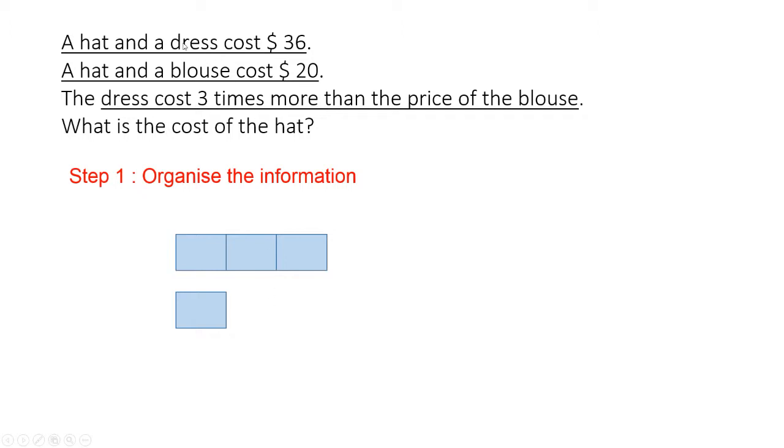And based on the first two sets of keywords, we notice that the hat is a repeated identity between these two comparisons. So we're going to add the hat to the left side of the model. Then we add in the total for the two pairs of items. So now we have completed organizing the information.